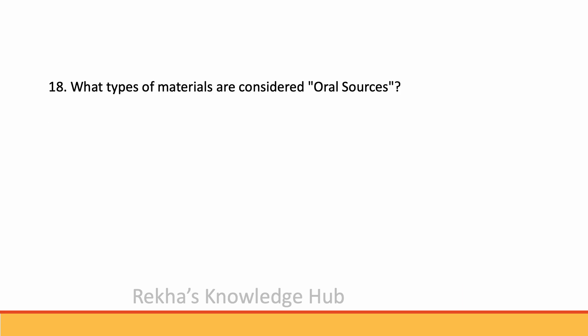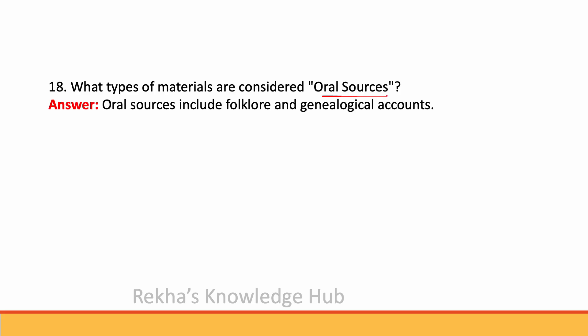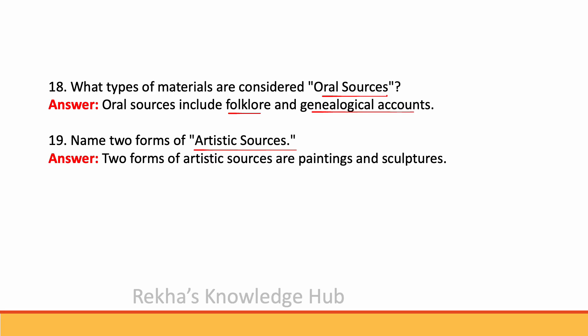What types of materials are considered oral sources? Oral sources include folklore and genealogical accounts. Two forms of artistic sources are paintings and sculptures.